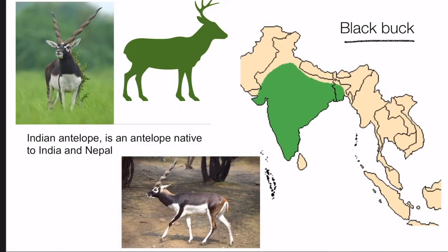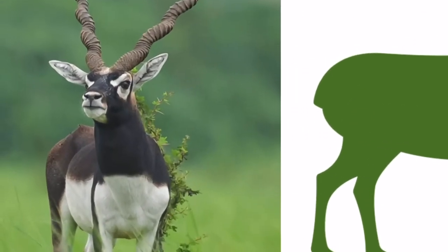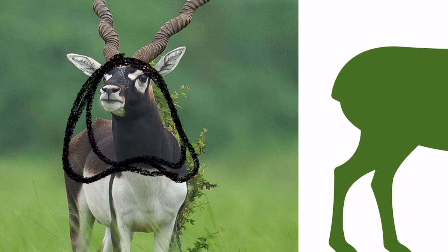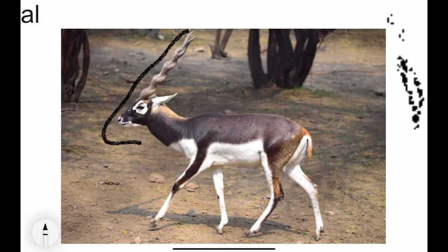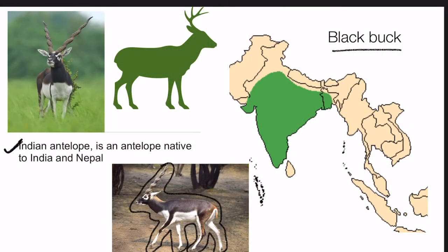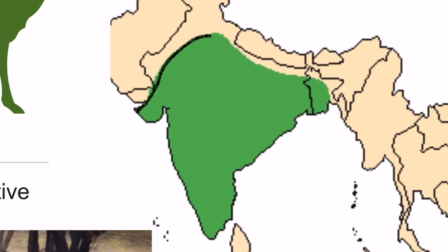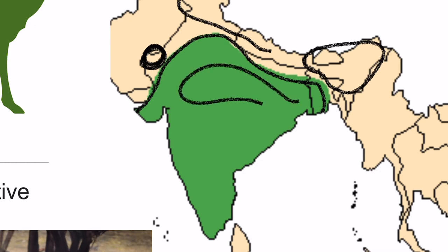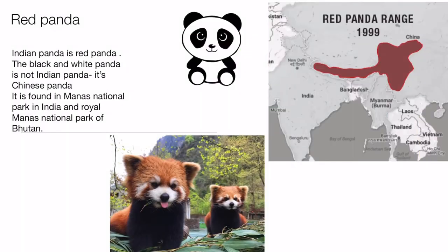The next animal is the black buck, also called the Indian antelope. It has distinctive horns. It is called black buck because its upper torso part is black in color. Looking at India's map, it resides in almost all parts of India except for the Himalayan regions, desert regions, and northeastern national parks. So excluding those areas, black buck is found in all remaining national parks.